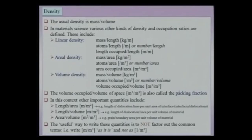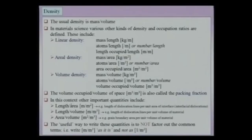The volume occupied per unit volume is also called the packing fraction. Another important quantity is length per unit area (m/m²) or length per unit volume (m/m³). This latter definition is very important in the context of dislocations — for instance, defining the length of dislocation lines per unit volume. I will write it as meter per meter cube to emphasize it is length of a dislocation line within a volume of material.